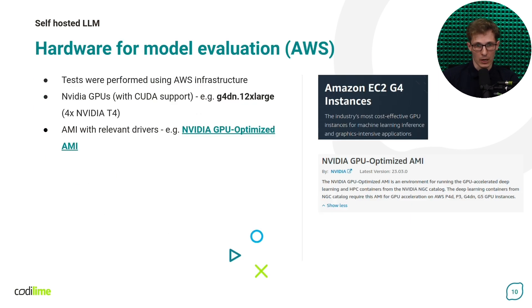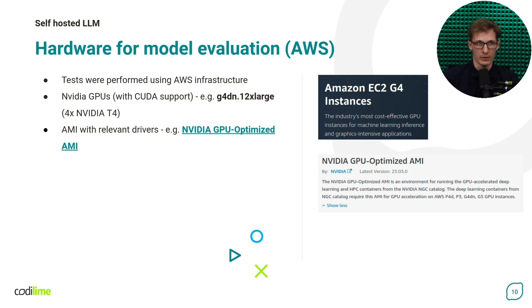To run such a large model, you will need some GPU. All of the examples shown today will use AWS as the cloud provider and NVIDIA as the GPU vendor. For the purpose of the test setup, I selected G4DN 12xLarge, which was estimated to be able to fit the selected model in memory. Since you will be running code on the GPU, it's important to have relevant drivers installed. Luckily, NVIDIA provides an AMI or machine image in AWS which we can use to spawn our EC2 with all dependencies fulfilled.